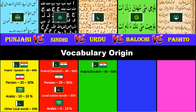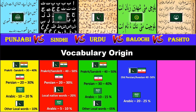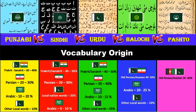For Urdu it's 40 to 50 percent native Prakrit or Sanskrit words, Persian with 30 to 40 percent, 10 to 15 percent Arabic and 5 percent others. Balochi consists of 40 to 50 percent native Old Persian and Avestan words, 20 to 25 percent Arabic and 10 percent other local words. For Pashto it's similar with 50 to 60 percent native Old Persian or Avestan words, 20 to 25 percent Arabic and 10 percent Farsi.